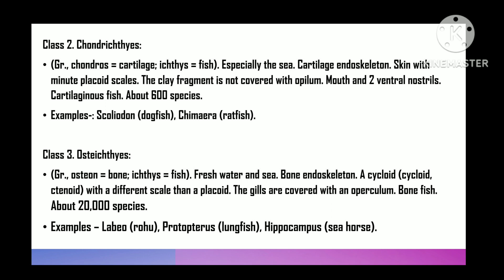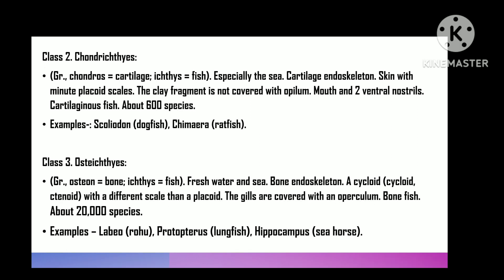Class 2 is Chondrichthyes — 'chondros' means cartilage, 'ichthys' means fish — mostly marine, cartilaginous endoskeleton, skin with placoid scales, gill slits not covered with operculum, mouth and two nostrils ventral. Males with claspers. Cartilaginous fishes, approximately 600 species. For example, Scoliodon, that is dogfish.